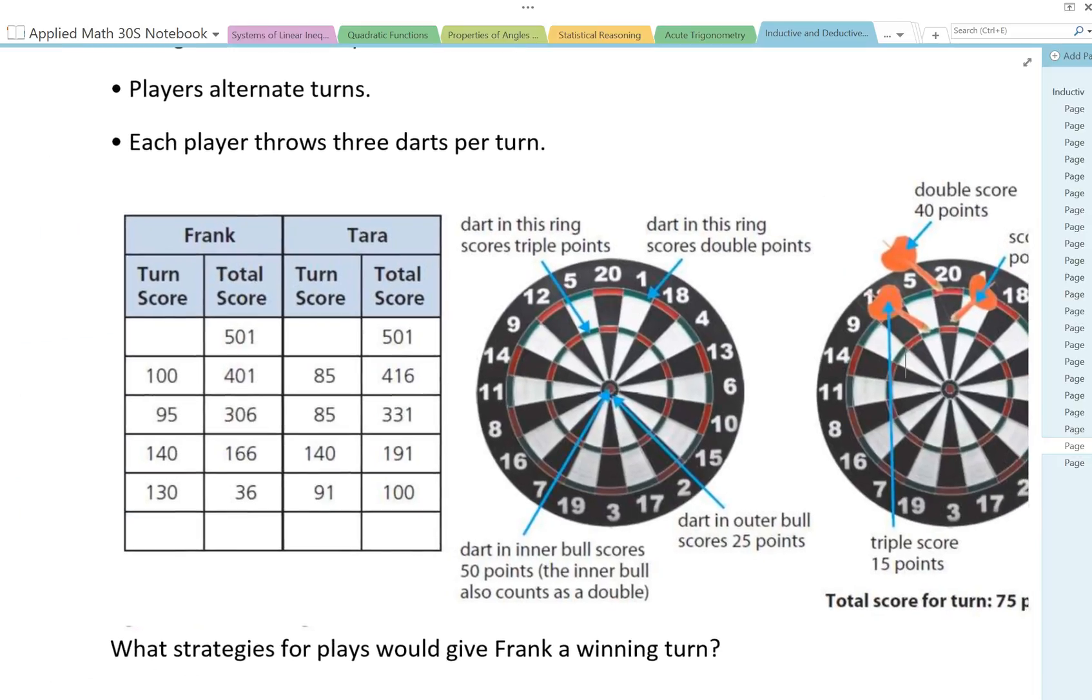Alright so let's look at what the scores look like so far. Here's Frank started at 501 scored 100 so reduced the score to 401, that's how that works. Kept going until right now he's sitting at 36, and then Tara again started at the same number 501 has reduced her score to 100.